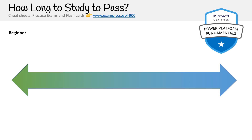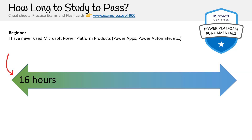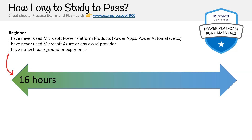So how long is it going to take to pass this certification? Well, it's going to really depend on your background. But if we had to generalize, we can look at it as a scale. If you are at the beginner level, you're looking at roughly 16 hours. By beginner, we mean someone that has never used Microsoft Power Platform products like Power Apps, Power Automate, Power BI, etc., someone that has never used Microsoft Azure or any cloud provider, or someone that has no tech background or experience.